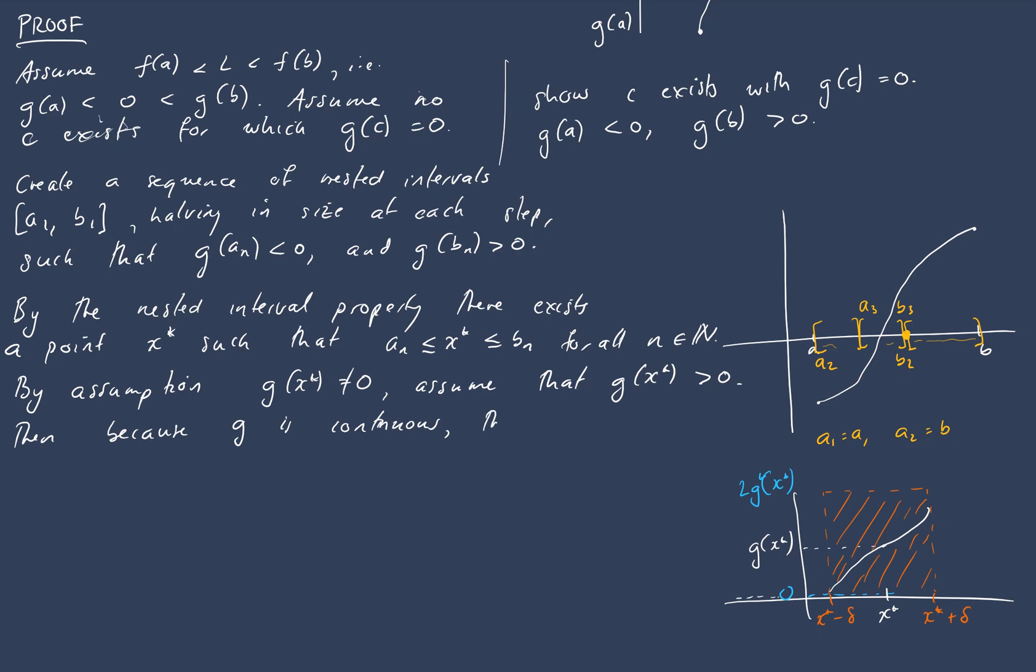So let's just maybe I wasn't quite clear what I just said so let's just say it in mathematical language as well. Because g is continuous there exists a delta greater than 0 such that if |x - x*| is less than delta, then |g(x) - g(x*)| is less than our choice of epsilon which is g(x*).